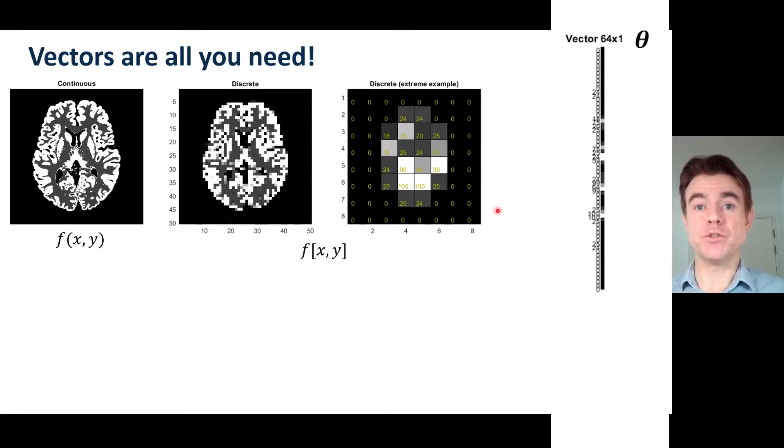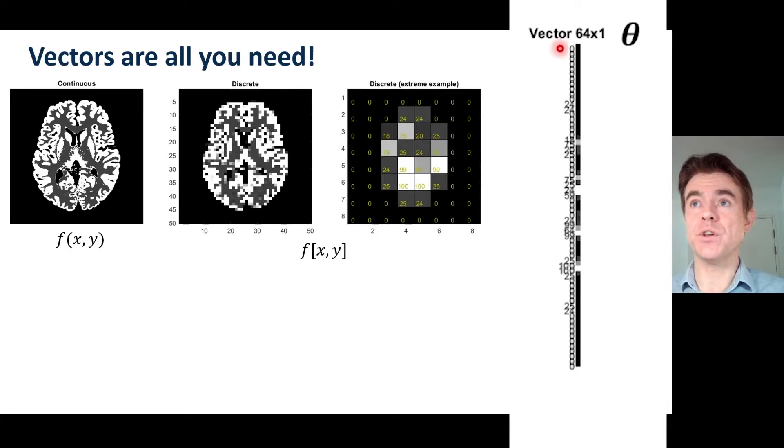So if I've got an 8x8 grid of pixels therefore I've got 64 values and I can stack them into a very tall column vector which I'll be calling theta.